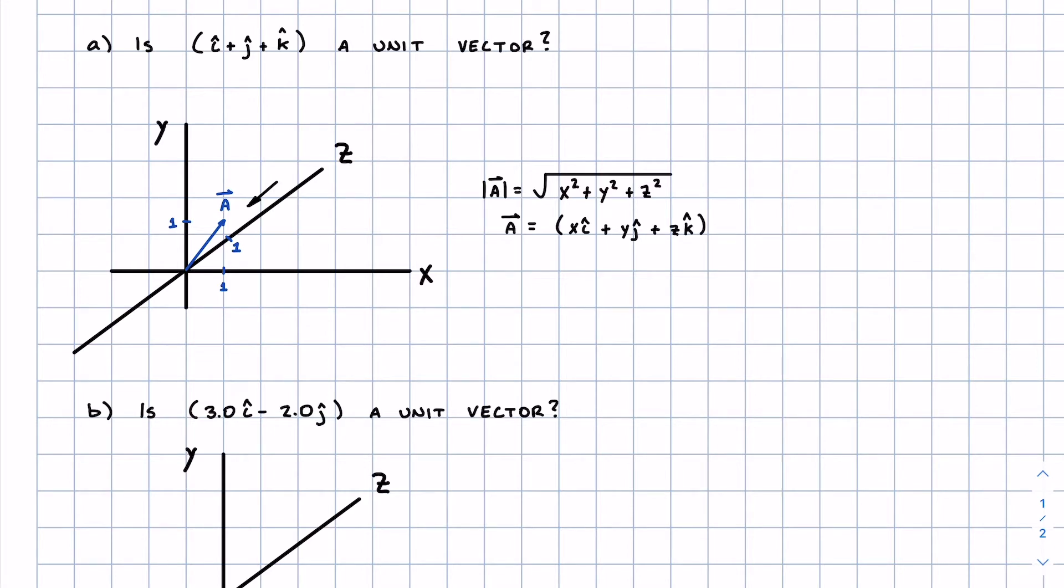The magnitude, noted here with the absolute value sign, the magnitude of vector A is equal to the square root of x squared plus y squared plus z squared. Now looking back over here where I've defined any vector as xi plus yj plus zk...